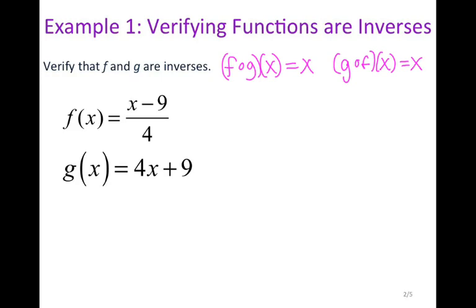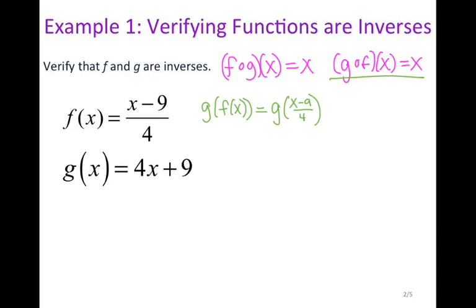It doesn't matter which direction you go in, but we're just going to take the composition. I am actually going to do g of f of x. So g of f of x I'm going to rewrite like this. And f of x is x minus 9 over 4, so what I really want to do is g of x minus 9 over 4. Where I see my x in the g function, I'm going to replace it with x minus 9 over 4.